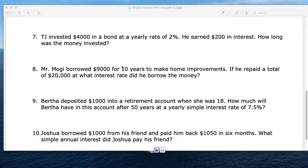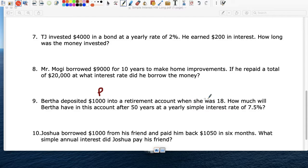Number nine. Bertha deposited $1,000. So this is P. In a retirement account when she was 18. She deposited money when she was 18. How much will she have in the account 50 years after? Oh my God. She deposited for 50 years. How much money will she have in the account if the simple interest rate. And here's the interest rate. 7.5. So 7.5%. Let's change that. It's going to go 1, 2. It's going to be 0.075.